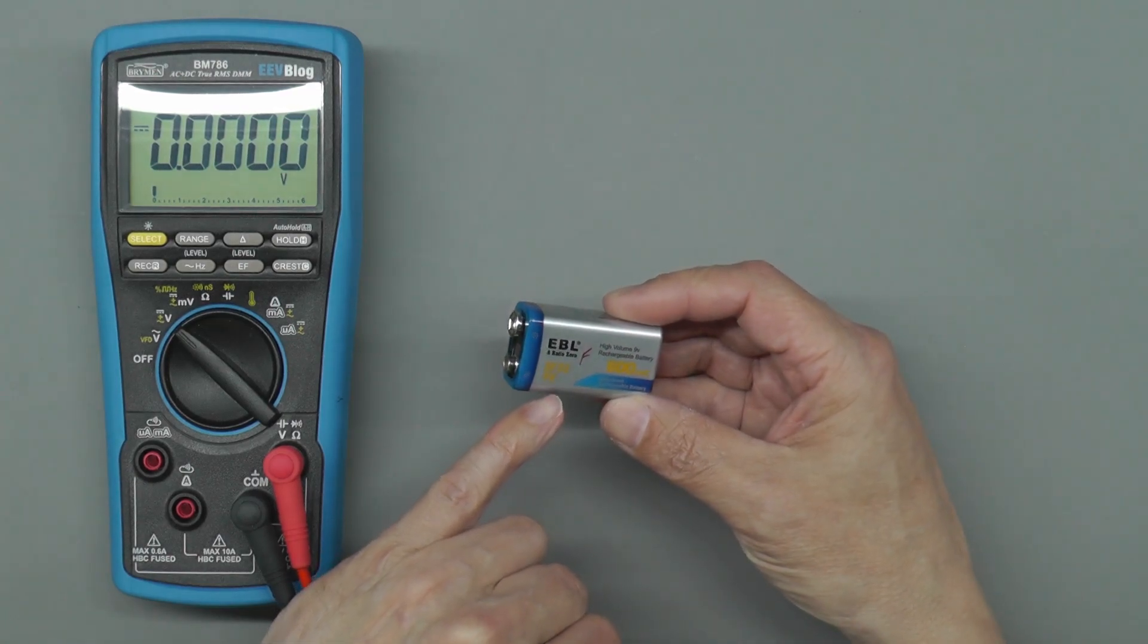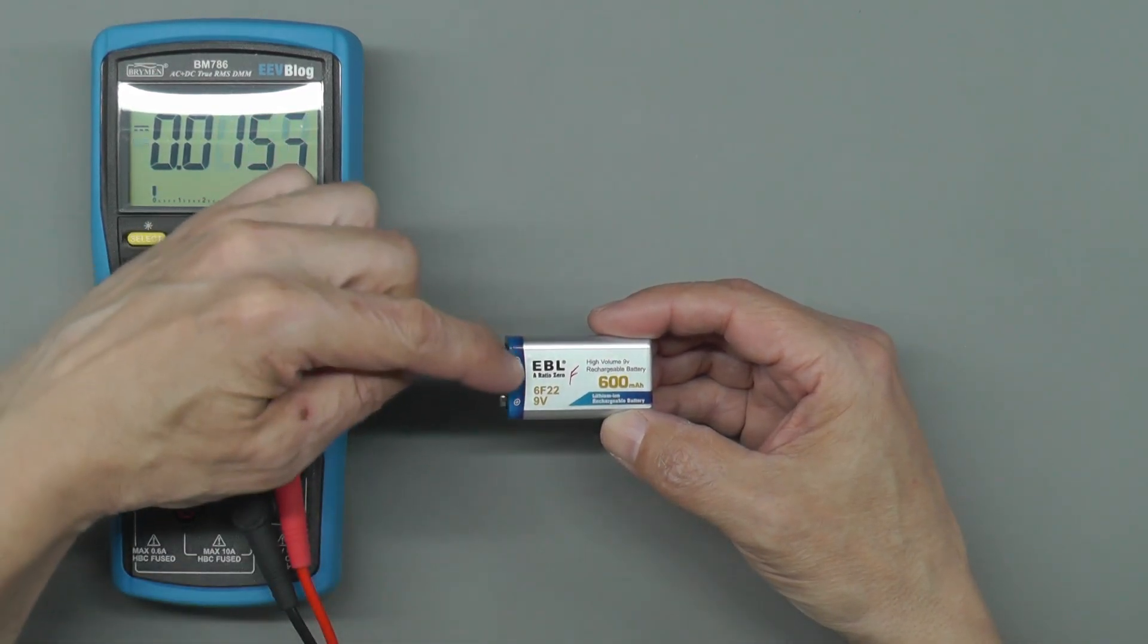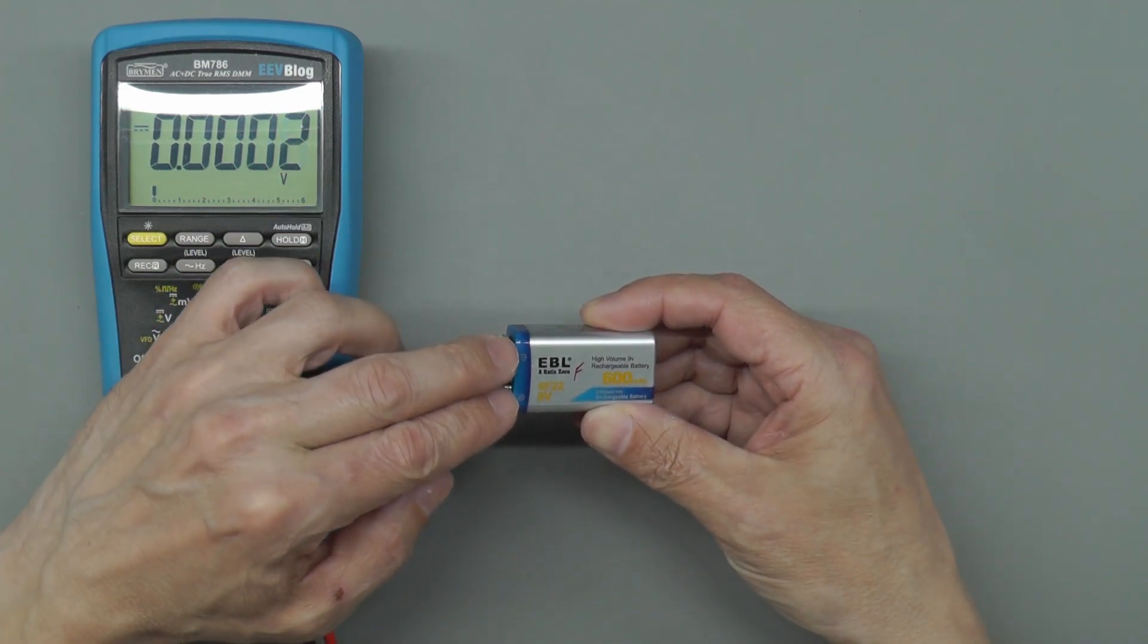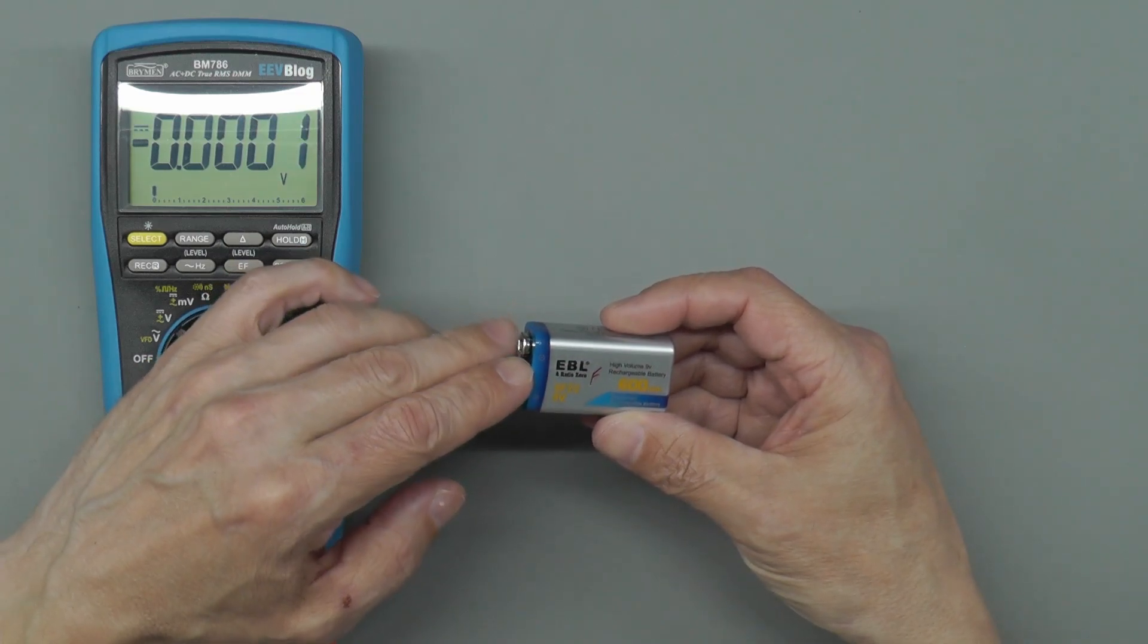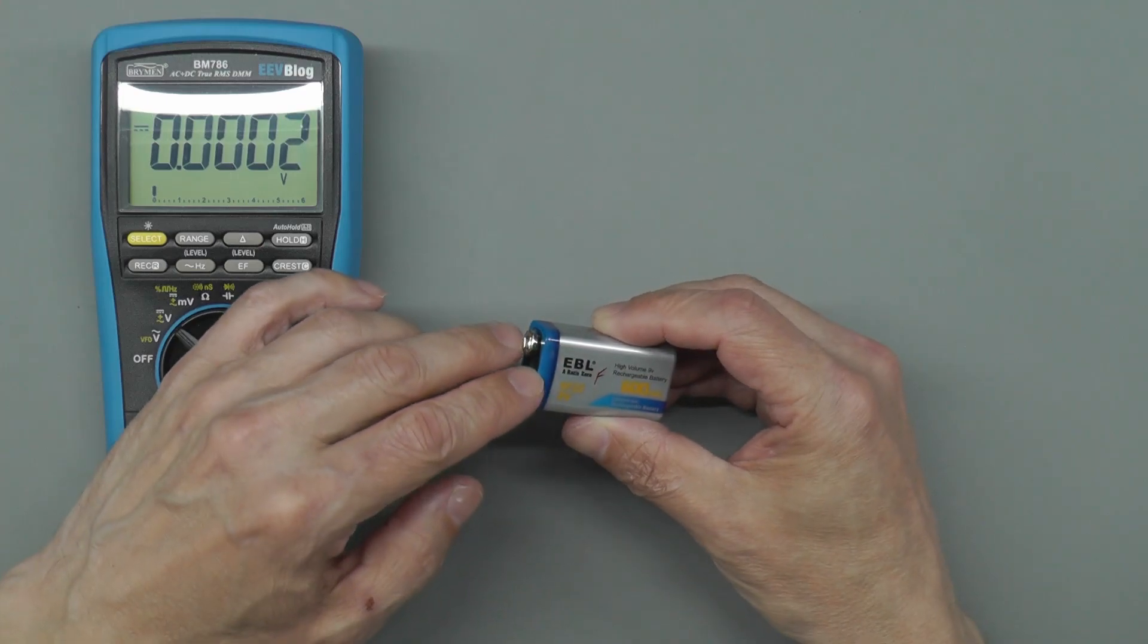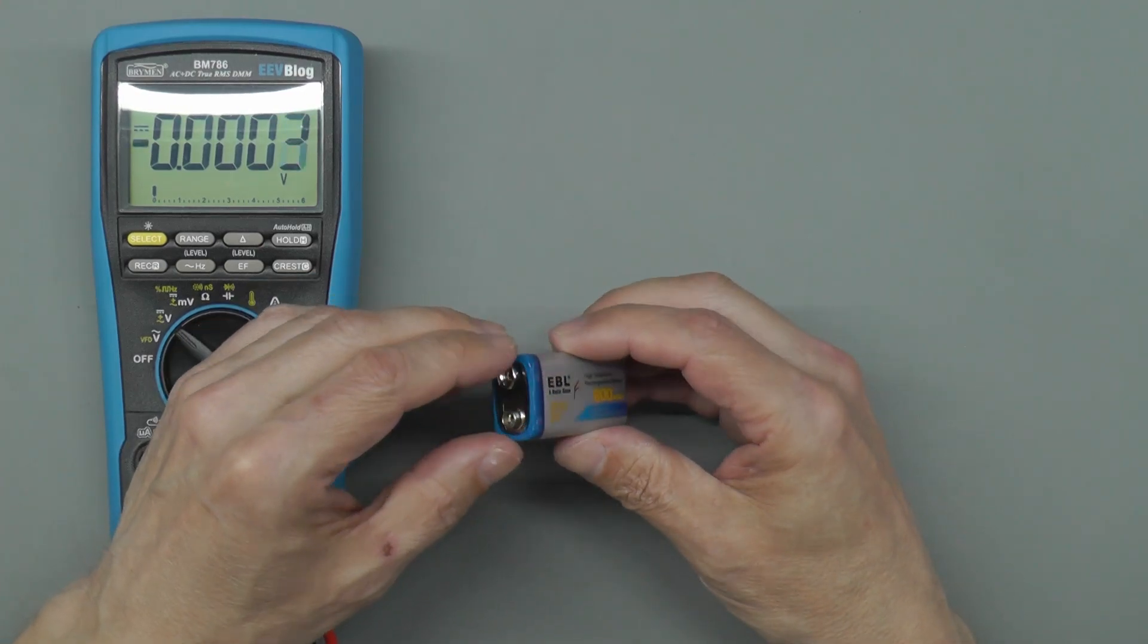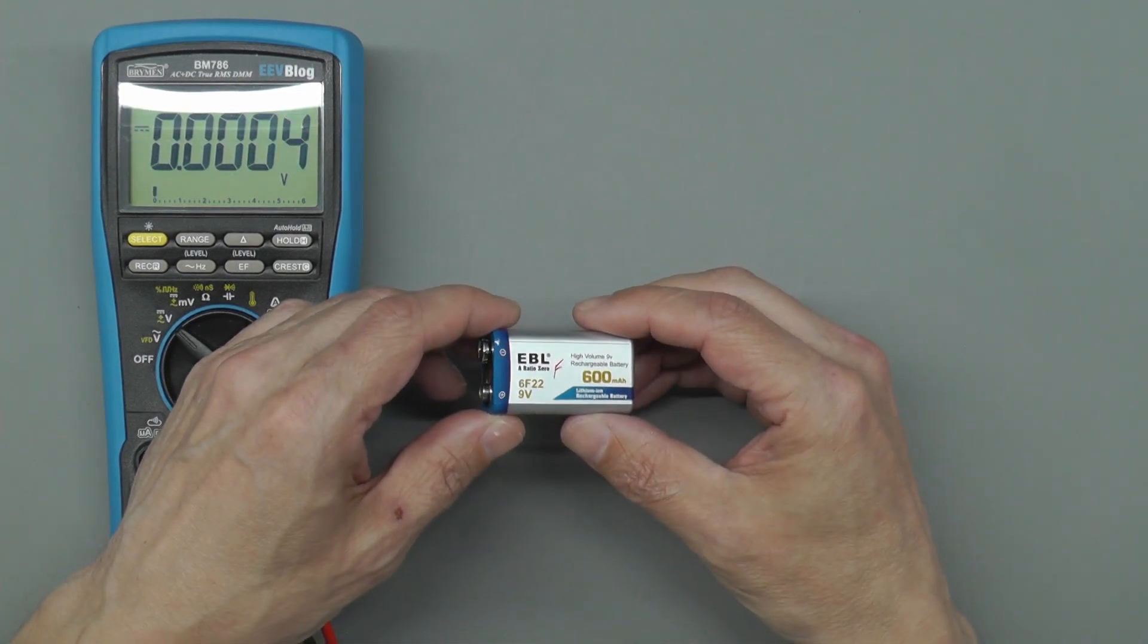Now I don't suspect there's any problem with the cells as such inside. I'd rather think the little battery protection circuit at the top of the battery, which is just underneath the connector on the top - I suspect there's probably a dry joint or something like that on that little circuit board. I have actually been inside one of these quite a long time ago, so I think I can just pop off the top there.